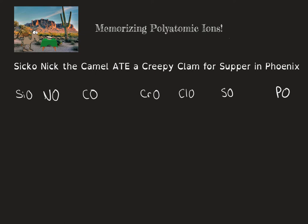What I like to do is underline the number of consonants in each word. Sicko has three consonants. Nick has three consonants. Camel has three. Creepy has four. Clam has three. Supper has four. And Phoenix has four. The consonants tell us the number of oxygens. So silicate has three oxygens, nitrate has three oxygens, carbonate has three oxygens, chromate has four oxygens, chlorate has three oxygens, sulfate has four oxygens, and phosphate has four oxygens.